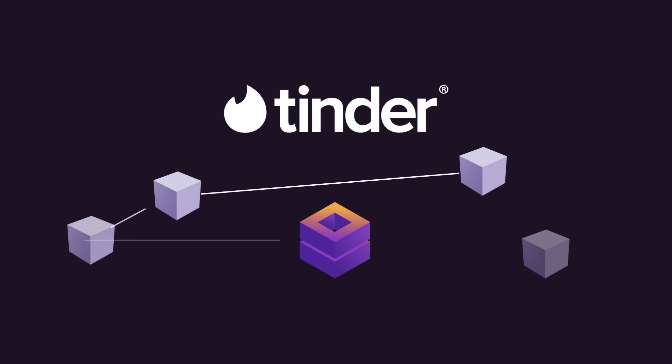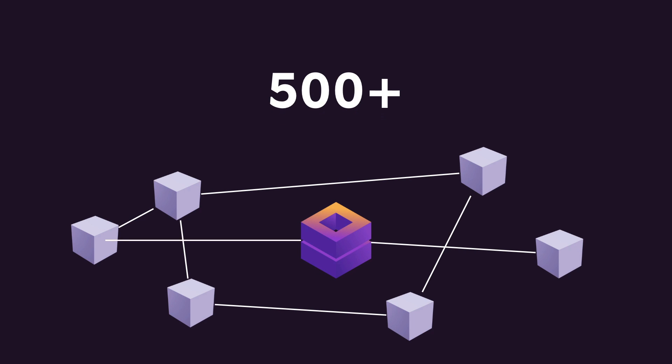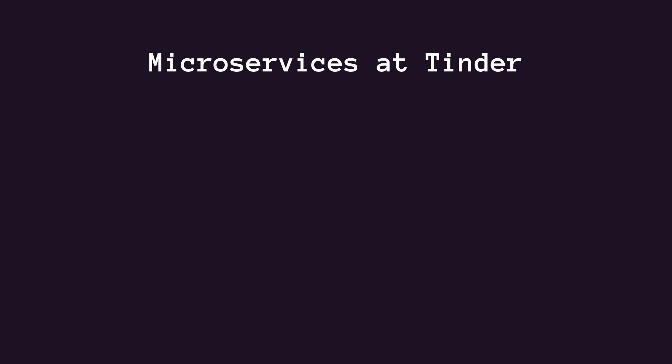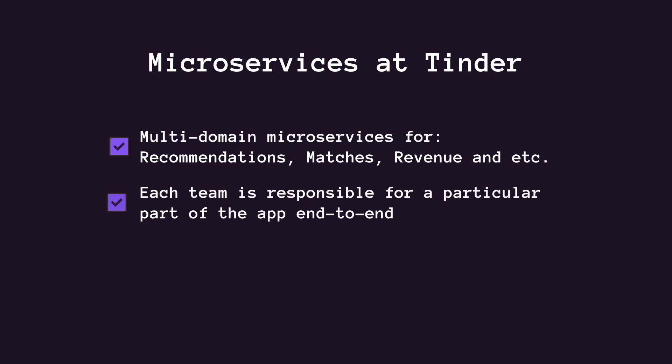Tinder has over 500 microservices that talk to each other for different data needs and use a service mesh under the hood. If you've never heard the term service mesh before, don't worry, I will come to that in a bit. Tinder has microservices for different purposes — Recommendations API, Match API, Revenue API, and so on. There are different application teams within Tinder that are responsible for each specific part of the app end-to-end.